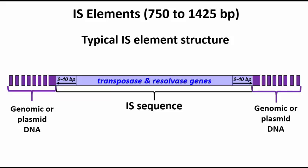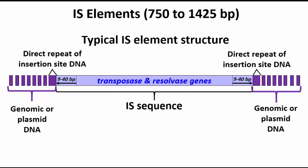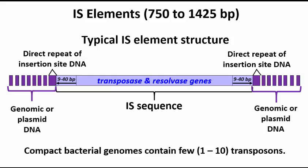Let's look at the structure of a typical IS element. They range in length from about 750 to a little more than 1400 base pairs. They contain transposase and resolvase genes, which code for enzymes necessary for mobility. At either end of the IS element are inverted repeats, which are part of the IS element structure and are also essential for mobility. Genetically engineered elements that lack or have mutated inverted repeats cannot transpose. Wherever they insert, IS elements are also flanked by direct repeats. These are not part of the element itself, but are footprints of insertion in the target DNA — either genomic DNA or plasmid DNA. These direct repeats result from the mechanism of transposition. Because of their compact genomes, bacteria can only tolerate low copy numbers of IS elements or other transposons in their genome.